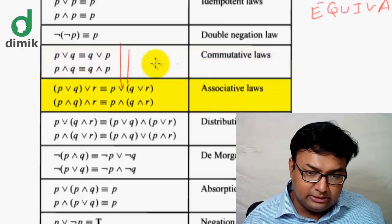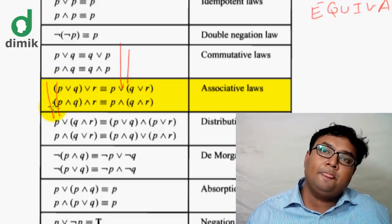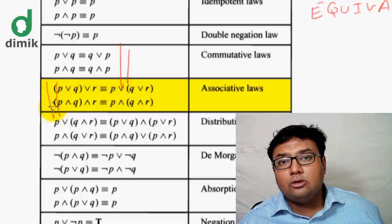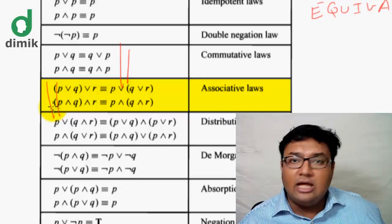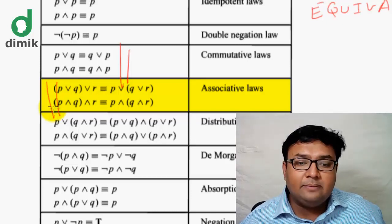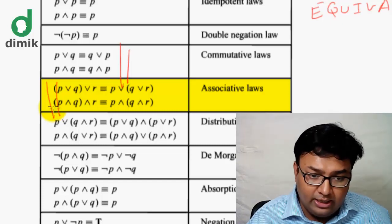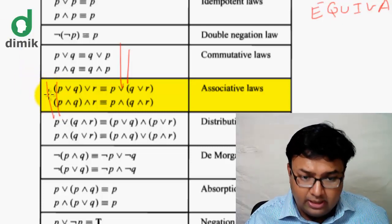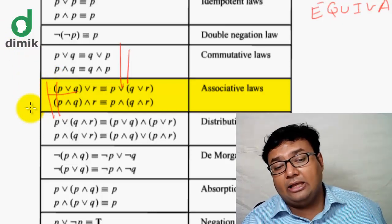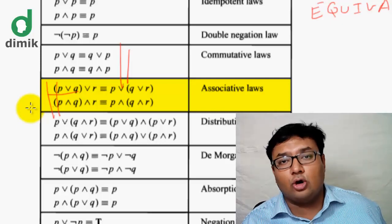The Associative Law involves three variables and is also mandatory. It states that grouping does not matter when applying the same operator across multiple propositions.